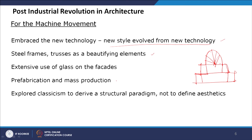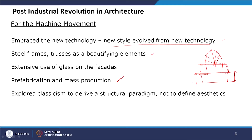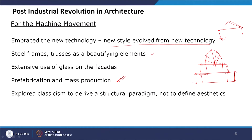Prefabrication and mass production were another plus point of the industrial revolution. There was a possibility of fabricating the same design again and again, which opposed the old craftsmanship of handcrafts. They also explored classicism to derive a structural paradigm. Classical architecture style evolved from structure — the Parthenon as a trabeated structure and the Pantheon as a dome — which is also present in the for-the-machine movement.